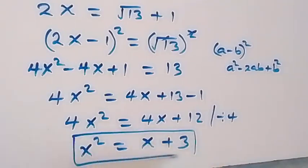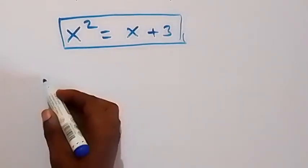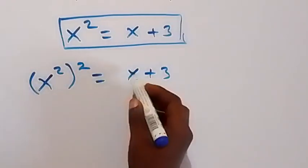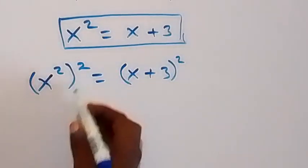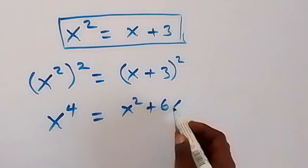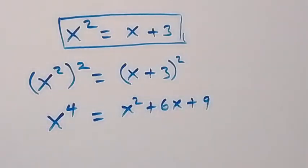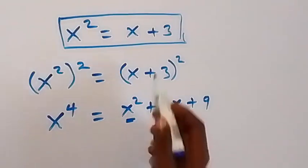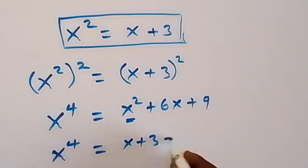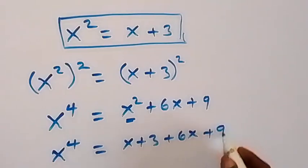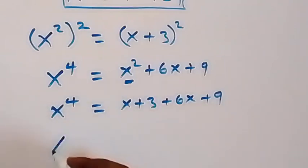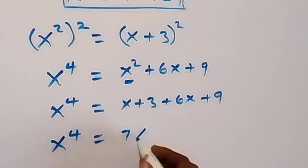Using x² = x + 3, let's square both sides: x⁴ = (x + 3)² = x² + 6x + 9. Replacing x² with x + 3 gives x⁴ = (x + 3) + 6x + 9. Collecting like terms: x⁴ = 7x + 12.